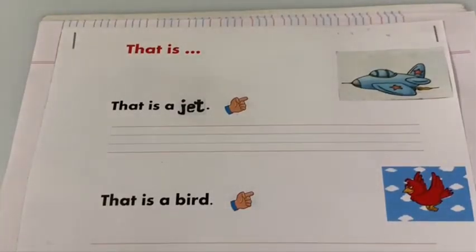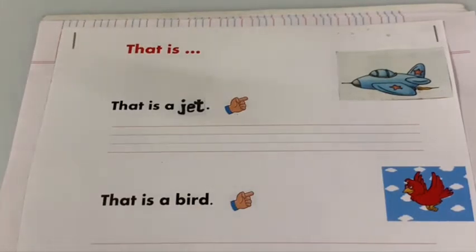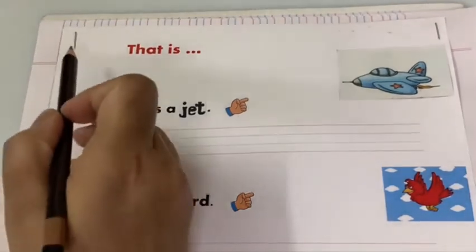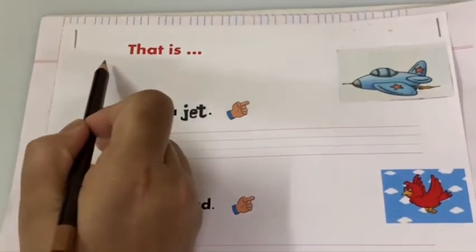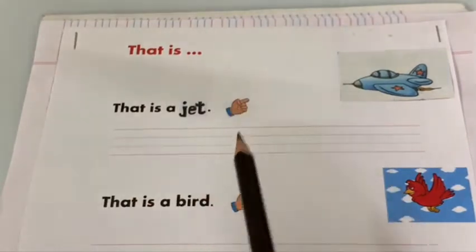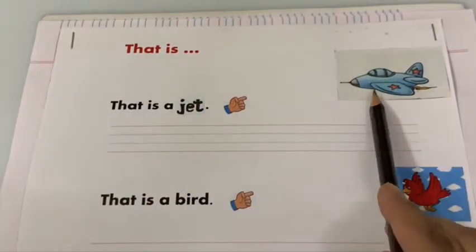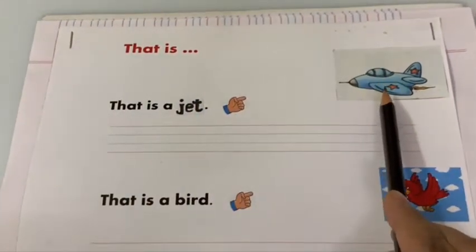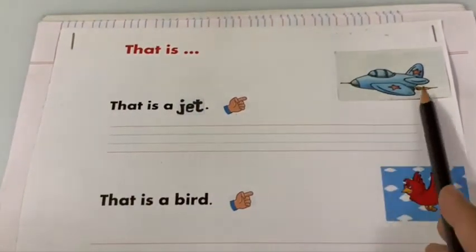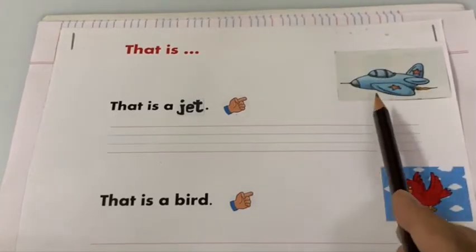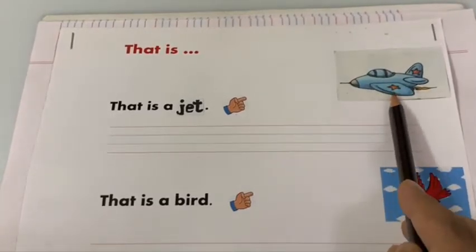Good morning children, welcome back to your English class. In this class we will be writing sentences. Okay, yes, put the date here. Now let's start. What do you see here children? It's a jet, correct children.